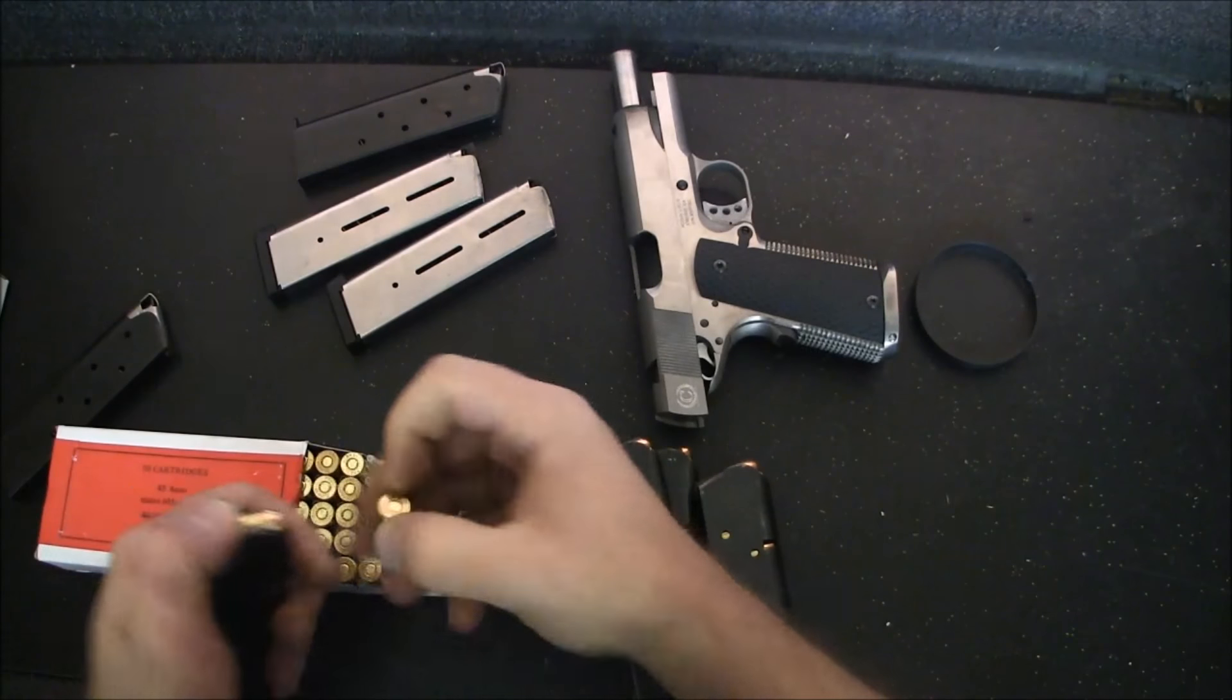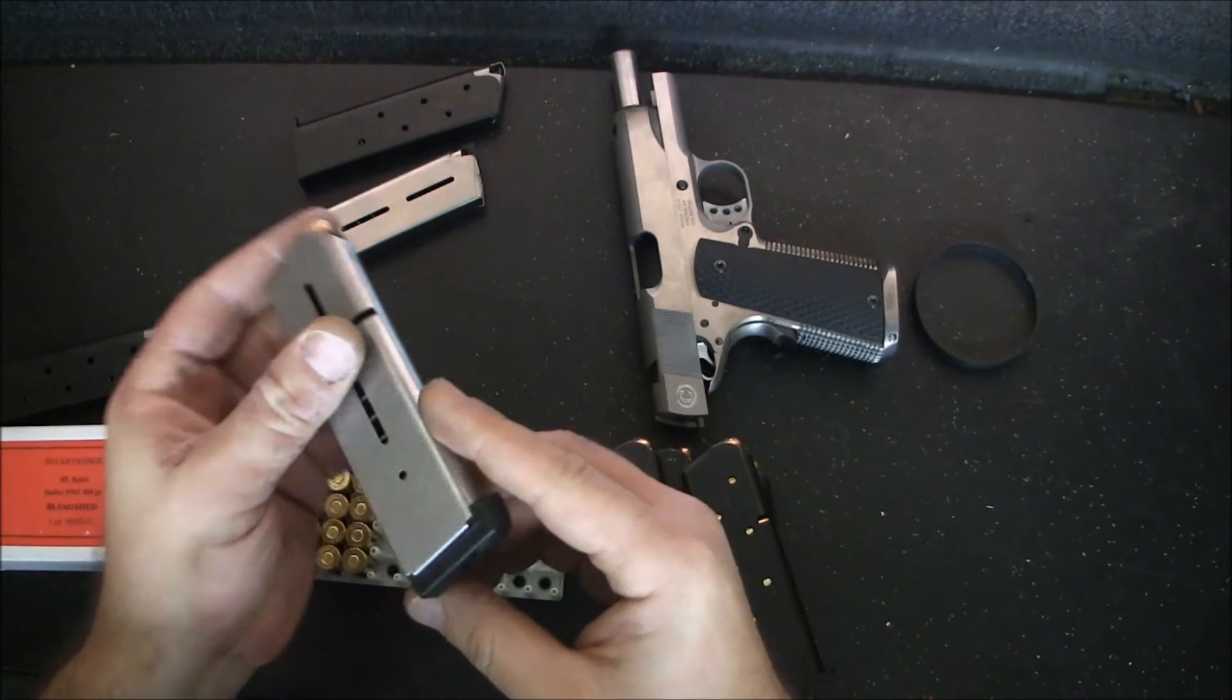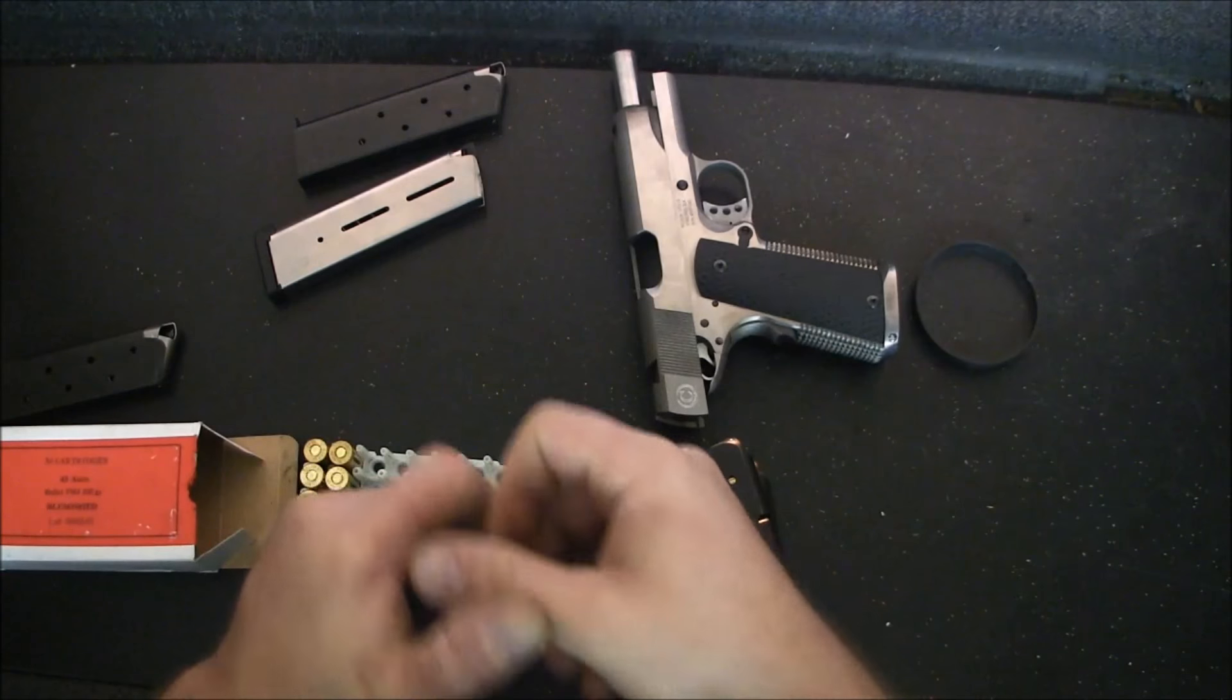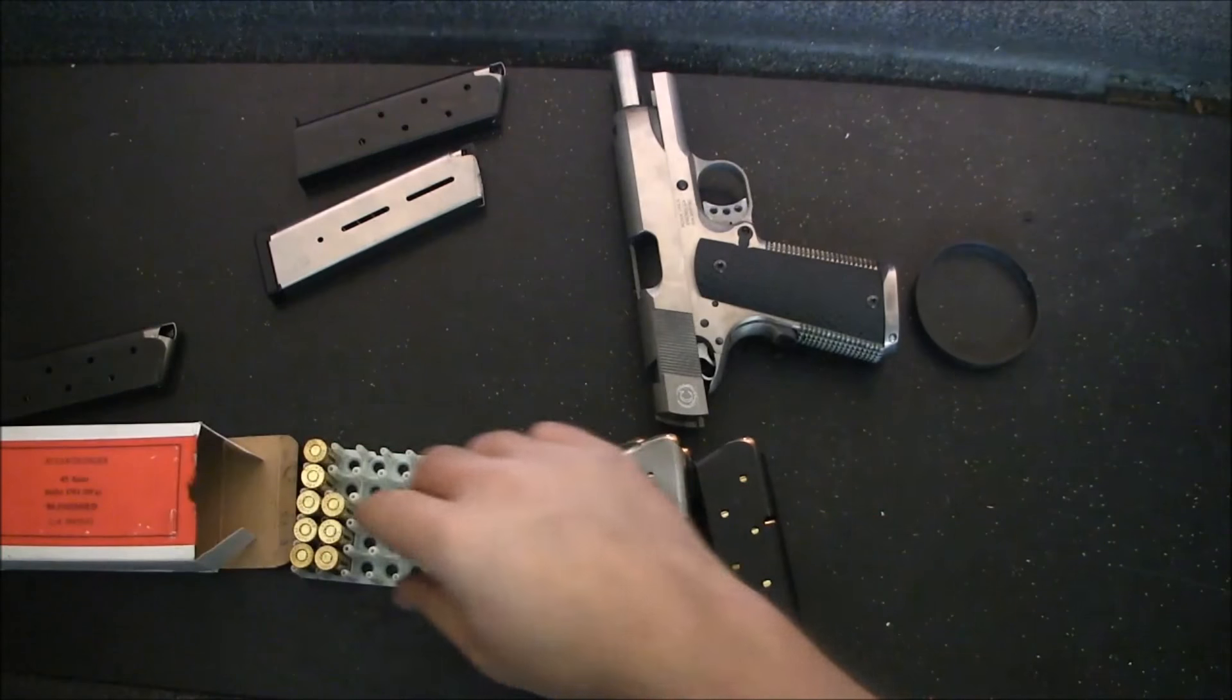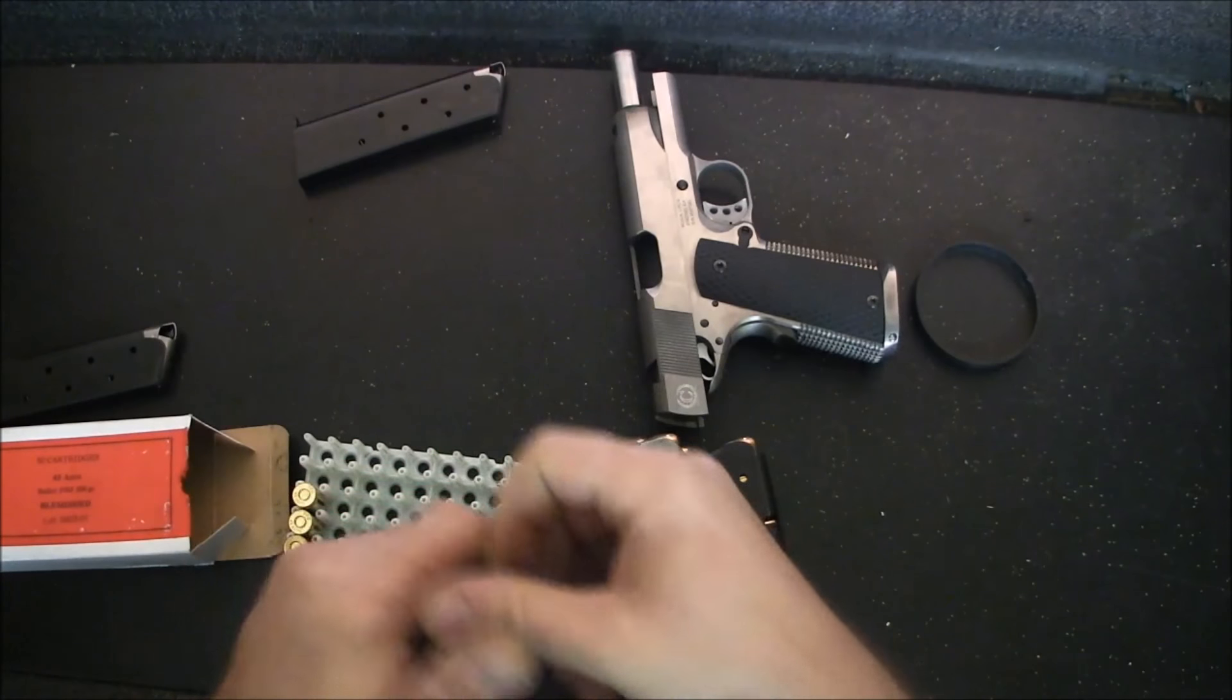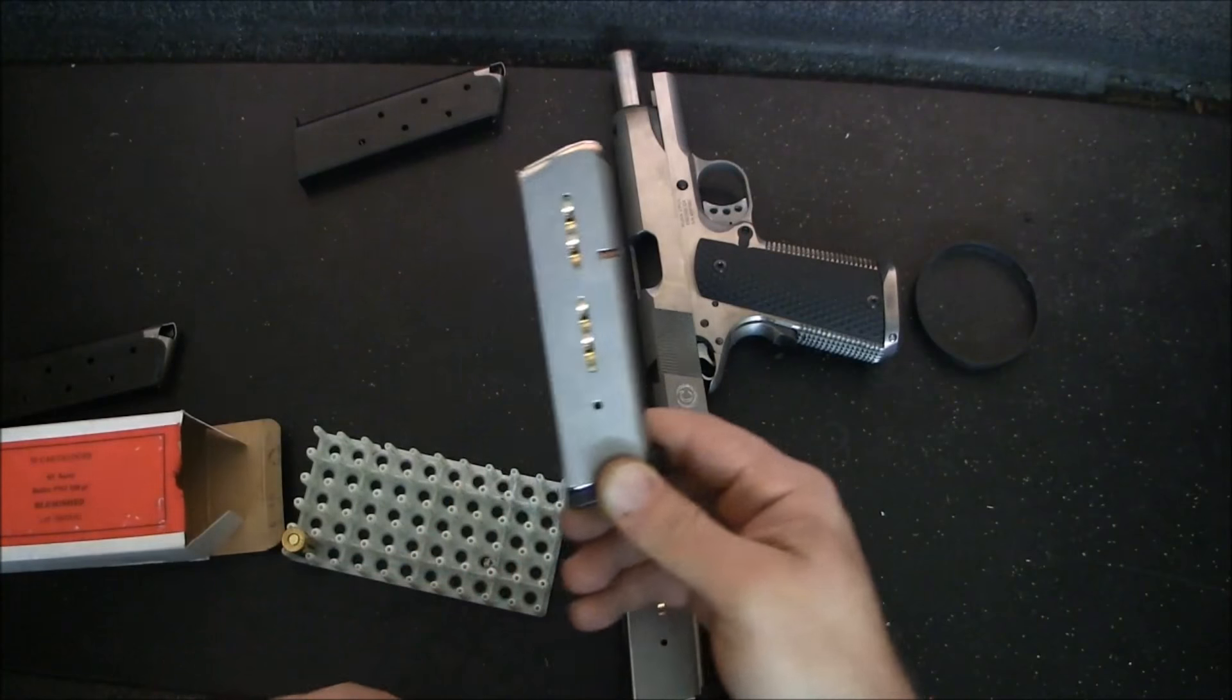As long as nothing broke, we're all good. And, these are Wilson Combat Magazines. I believe I replaced the internals with Tripp Springs and Followers some time ago. Because, I believe, these were 8 round magazines and I was getting double feeds with them, inertial feeds. So, I've converted them back to 7 round magazines. And, yeah, that's why that hole stays uncovered by the round, basically.